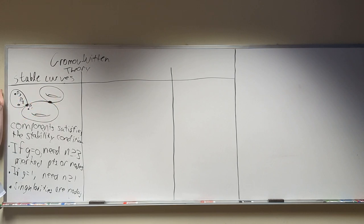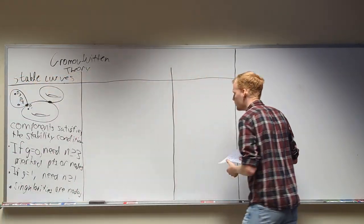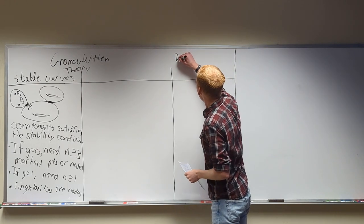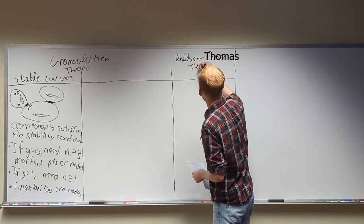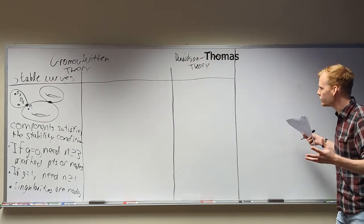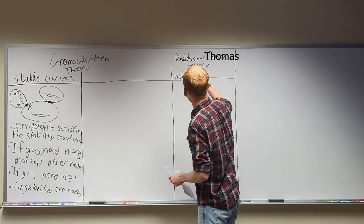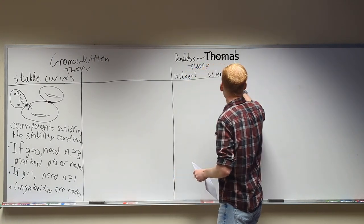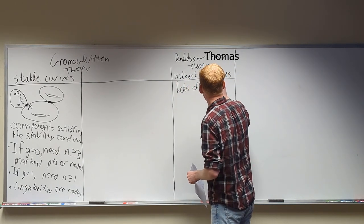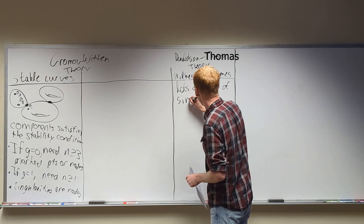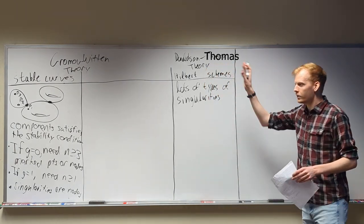This is one end of the intersection theory spectrum. If this is as nice as it gets, maybe as dastardly as it could get is in Donaldson-Thomas theory. In Donaldson-Thomas theory, they study these unimaginable cosmic horrors, otherwise known as Hilbert schemes. Why are they unimaginable cosmic horrors? They have lots and lots of singularities — lots of types of singularities. That was not a technical term; they're just the opposite end of the spectrum of stable curves.